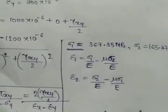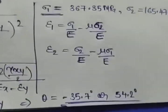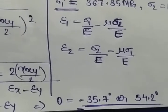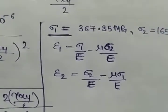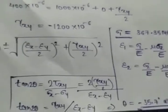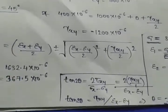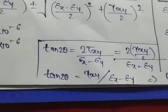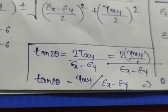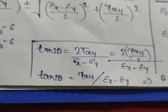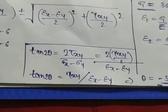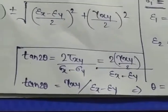Now, to find the principal stresses sigma_1 and sigma_2, we apply the stress formula using the resolved strain values. Substituting into the formula, sigma_1 and sigma_2 will come out. For the last quantity, theta_1,2, we apply the angle formula and substitute the known values to find the principal angles.